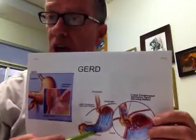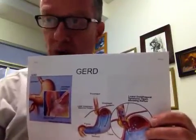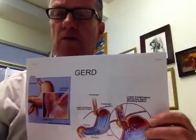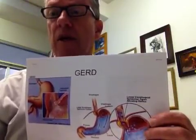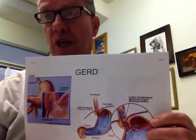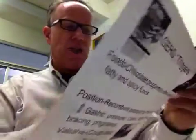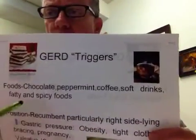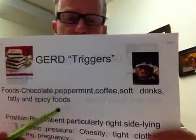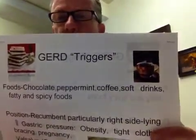Appropriate care for GERD includes moderating your weight, not eating right before you recline or go to bed, and using proton pump inhibitor medications like Prilosec or Nexium. The triggers for GERD include some foods we like: chocolate, peppermint, coffee, soft drinks, and fatty and spicy foods.